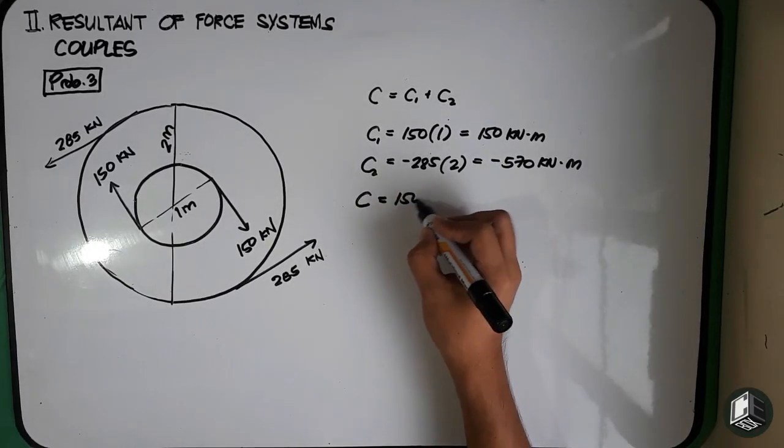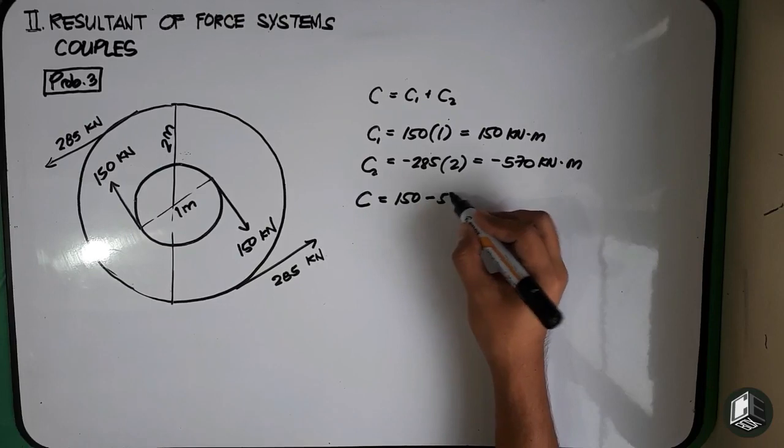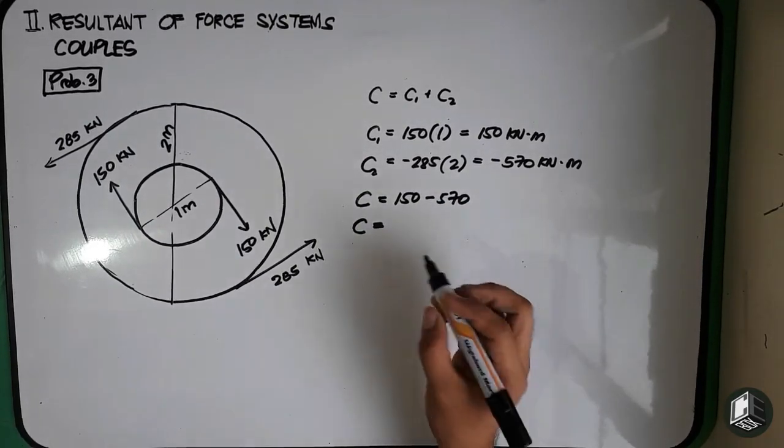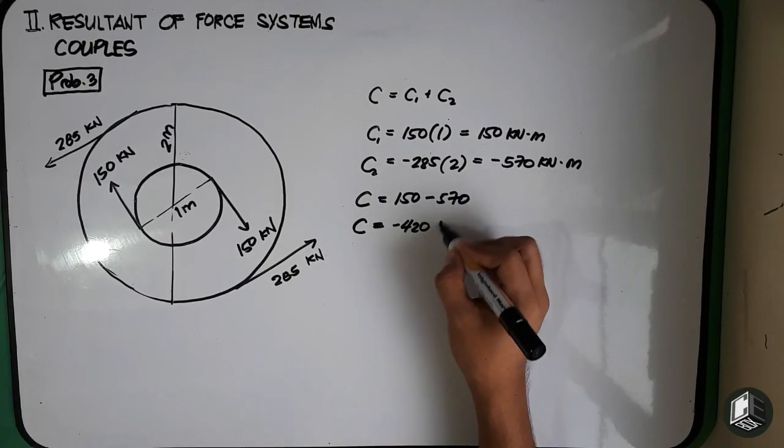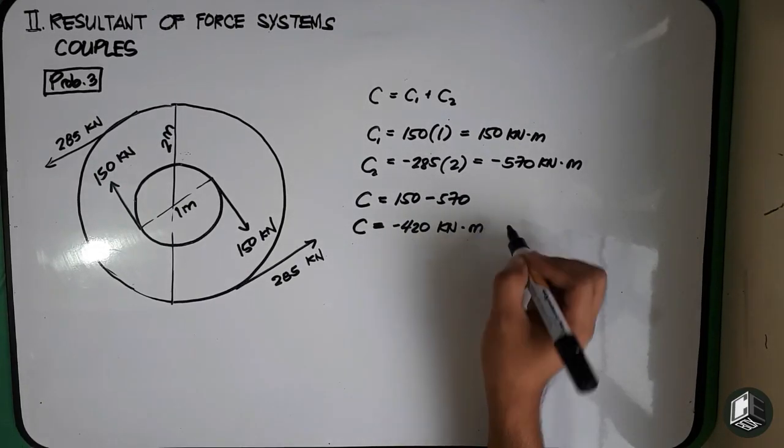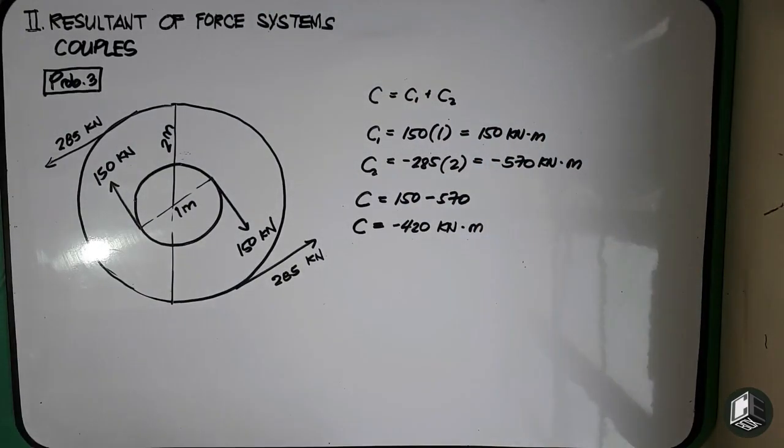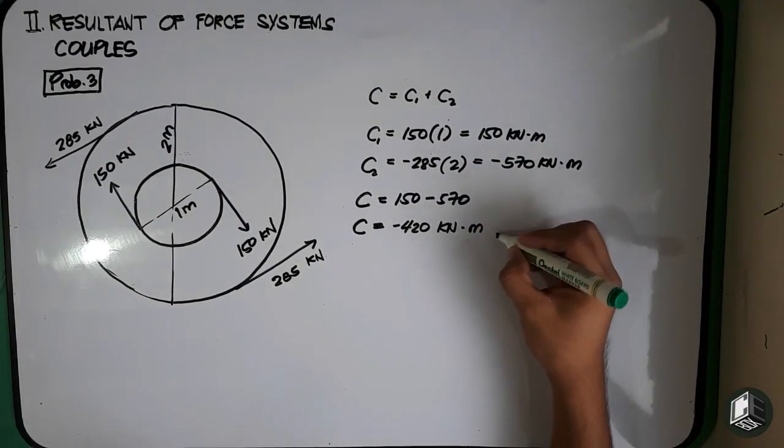is equals to 150 minus 570. So yung ating overall couple is equals to negative 420 kN and since it is negative, therefore yung ating couple is counterclockwise.